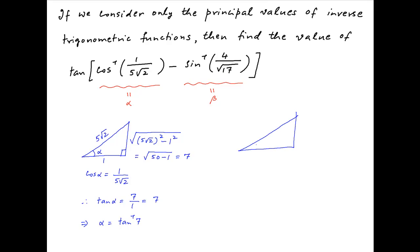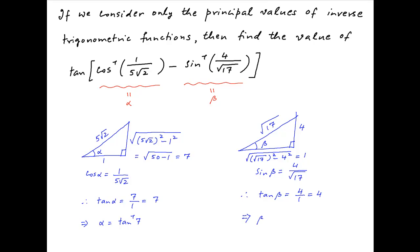Similarly, consider a right angle triangle where the angle between the base and the hypotenuse is beta. Since sin beta equals 4 upon root 17, the perpendicular is 4 and the hypotenuse is root 17. Using Pythagoras theorem, the base equals square root of (17 minus 16), which equals 1. Therefore tan beta equals perpendicular upon base, which is 4, so beta equals tan inverse 4.